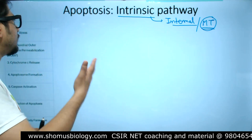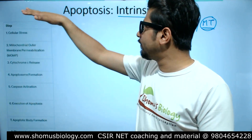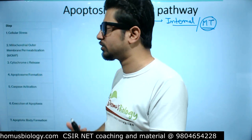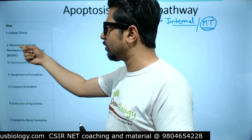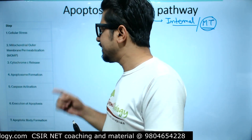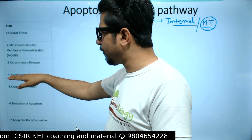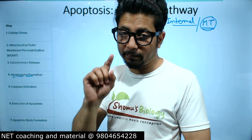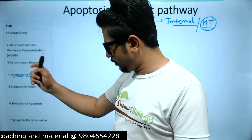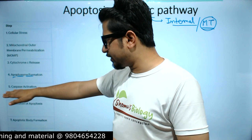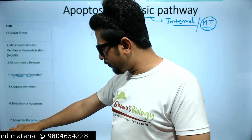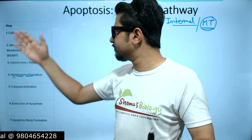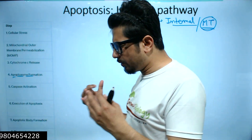Whenever you hear 'intrinsic pathway of apoptosis,' the first thing you should put in your mind is mitochondria. These are the important steps of the apoptosis intrinsic pathway in sequence: starting with cellular stress, then the role of mitochondria — mitochondrial outer membrane permeabilization — third is cytochrome c release from the mitochondria, fourth is apoptosome formation, then caspase activation and the caspase cascade signaling, then execution of apoptosis, apoptotic body formation, and phagocytosis.